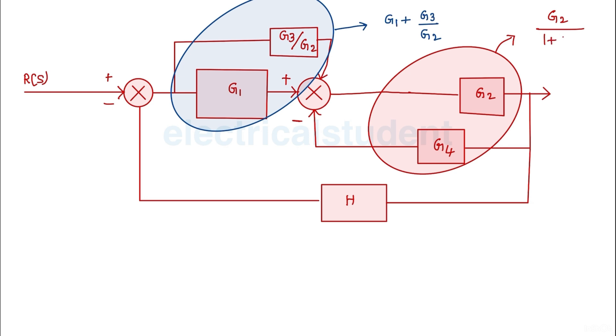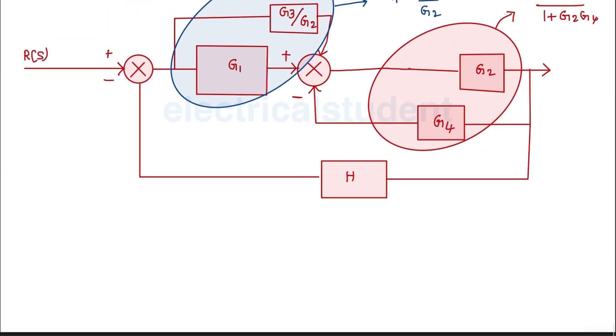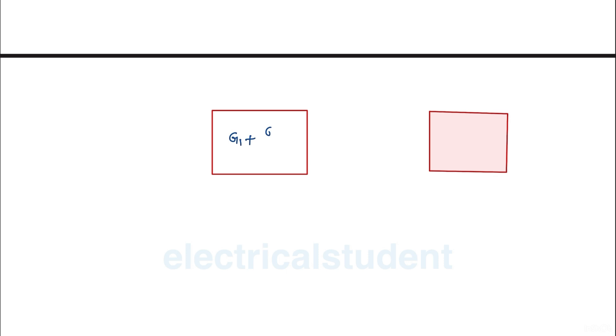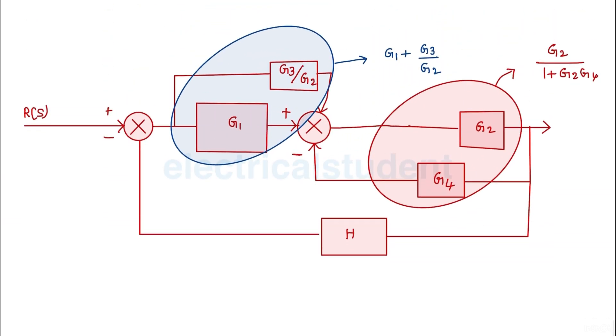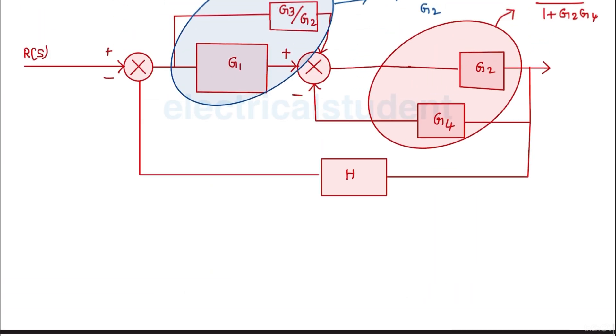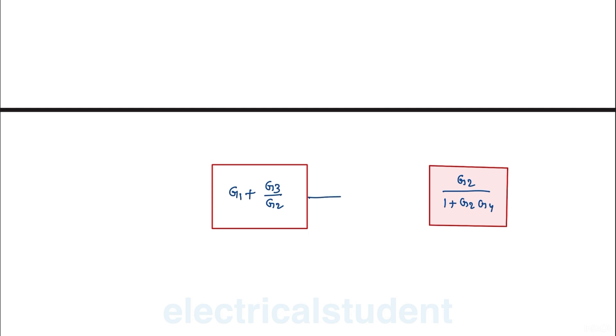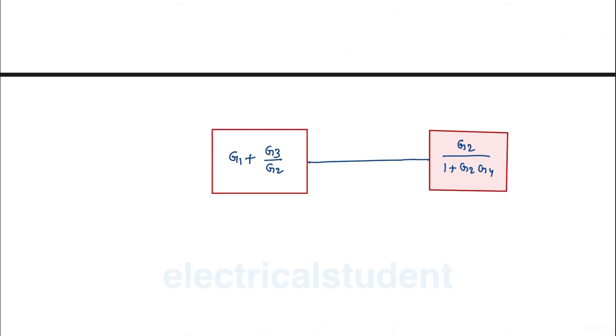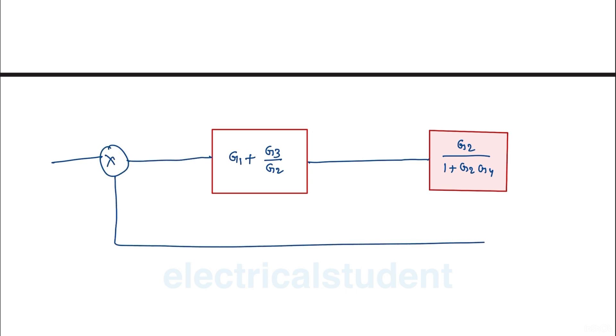Similarly, these two blocks form a feedback loop, giving you g2 over 1 plus g2 times g4. Now there are effectively only two blocks: one is g1 plus g3 over g2, and the second is g2 over 1 plus g2*g4. These two blocks are connected in series and forming a feedback loop with feedback path gain h.